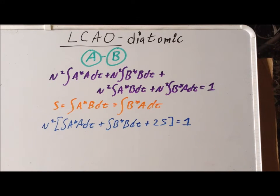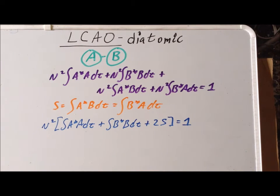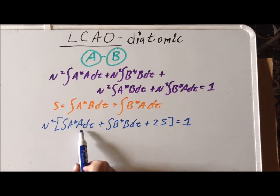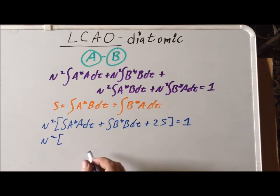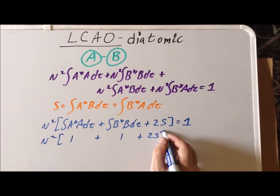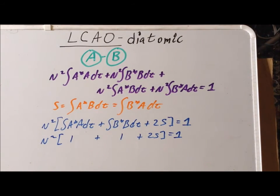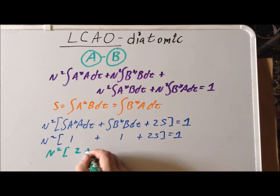Now, we know that A and B are each normalized atomic orbitals — A is a normalized atomic orbital on atom A, and B is a normalized atomic orbital on atom B. Using the definition of normalized orbitals, the integral of A*A dτ equals 1 and the integral of B*B dτ also equals 1. So the left-hand side becomes N² times 1 plus 1 plus 2S, and the entire expression equals 1.